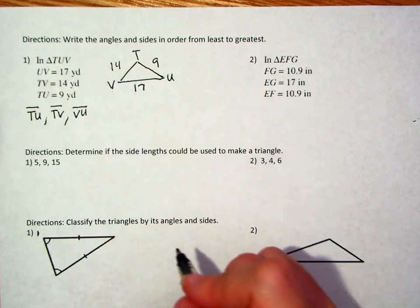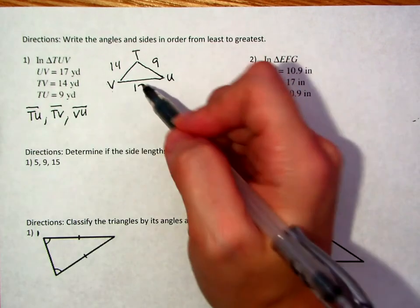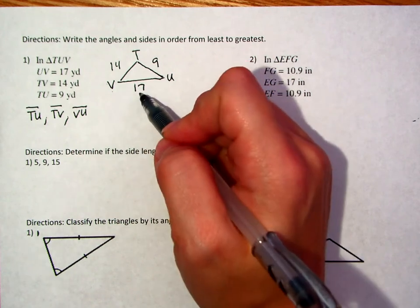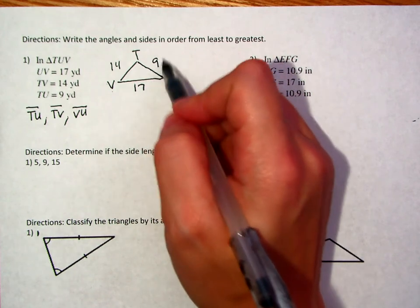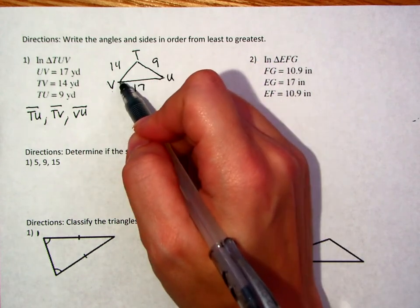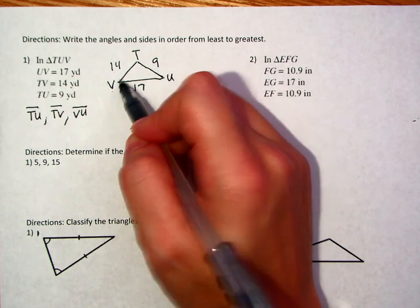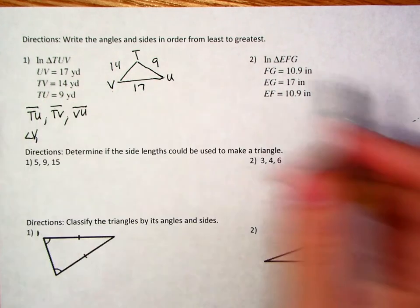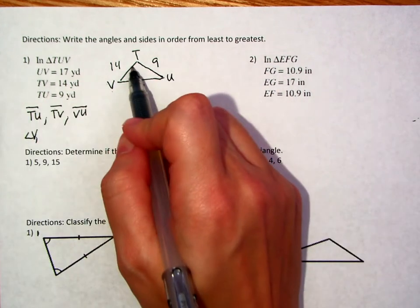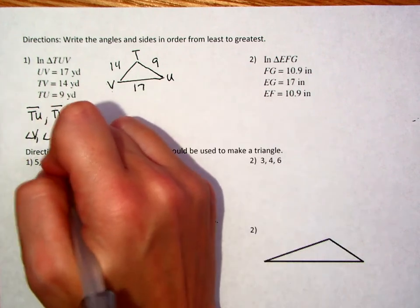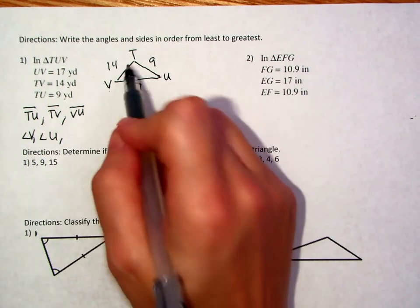So that's our sides. To do the angles, remember you want to look at the angle that is opposite of the smallest side because that's going to be the smallest angle. So opposite of this 9 would be angle V, and then we're looking for the 14, so opposite of the 14 would be angle U, and then we're looking at the 17, which would be angle T.